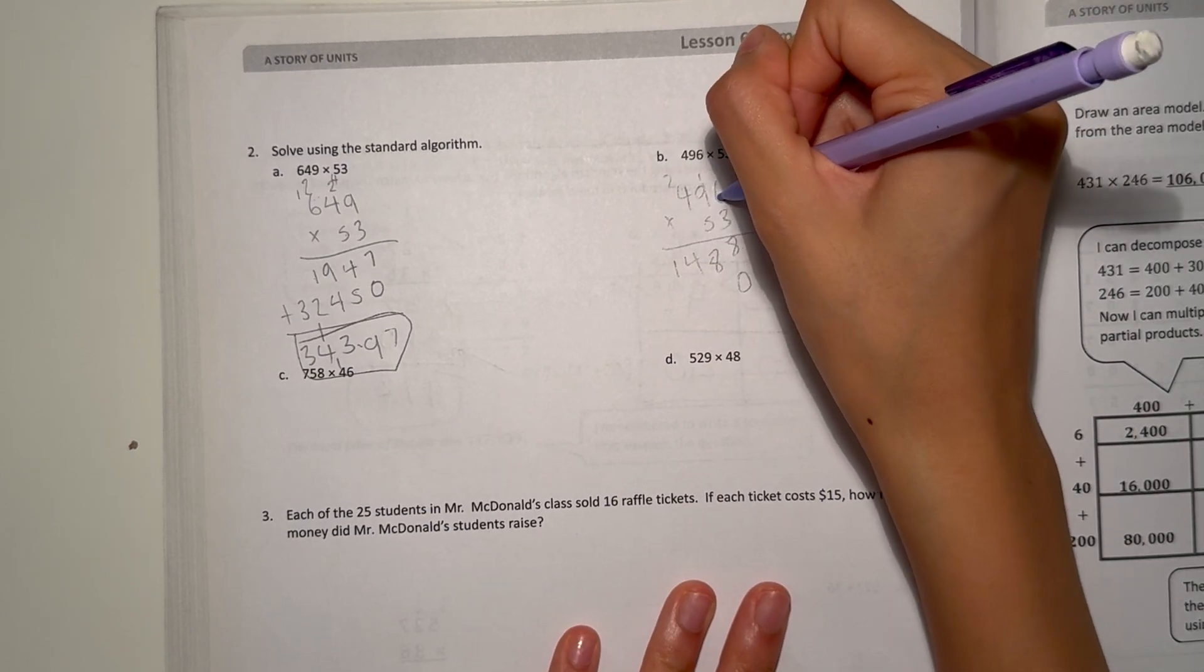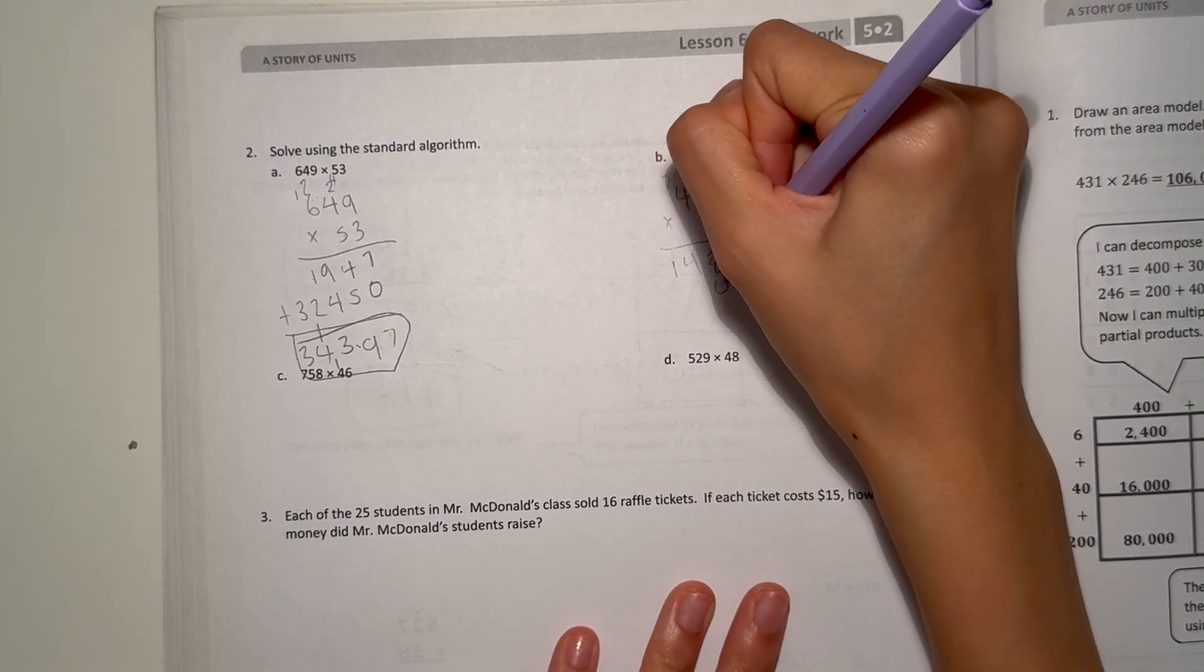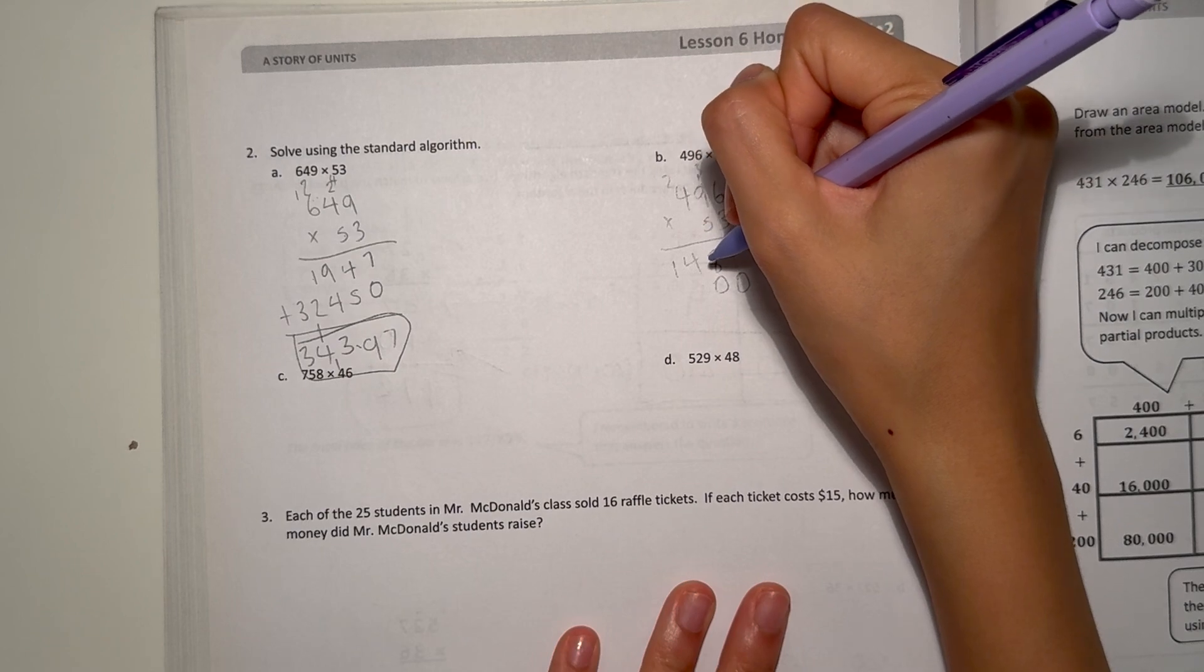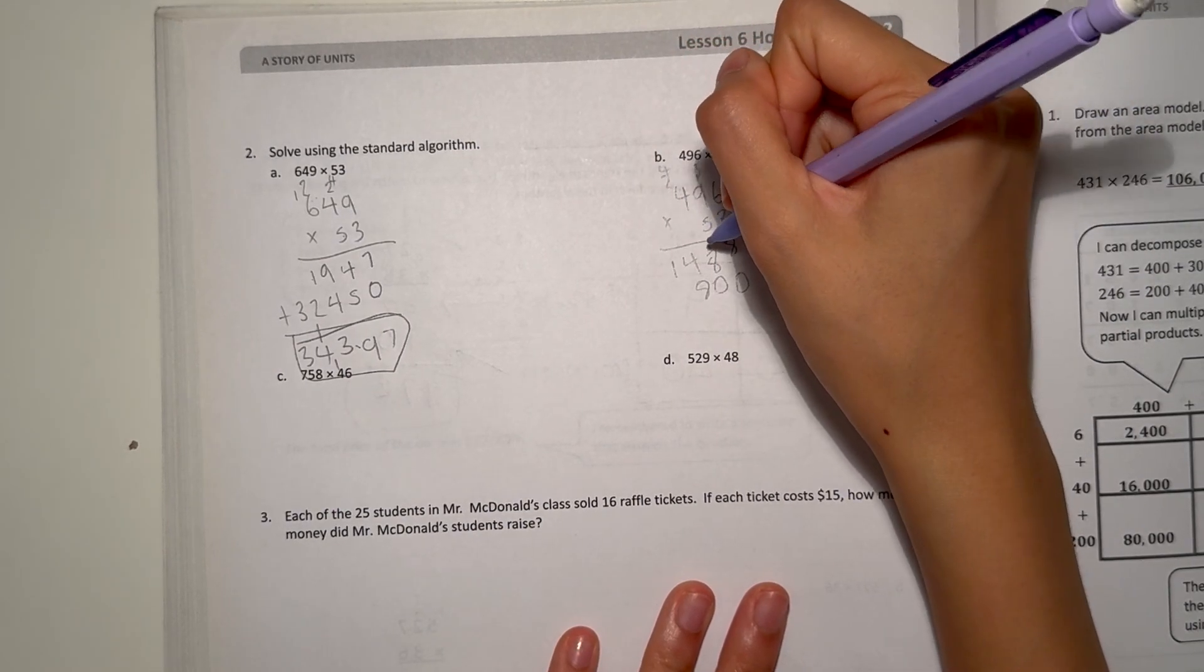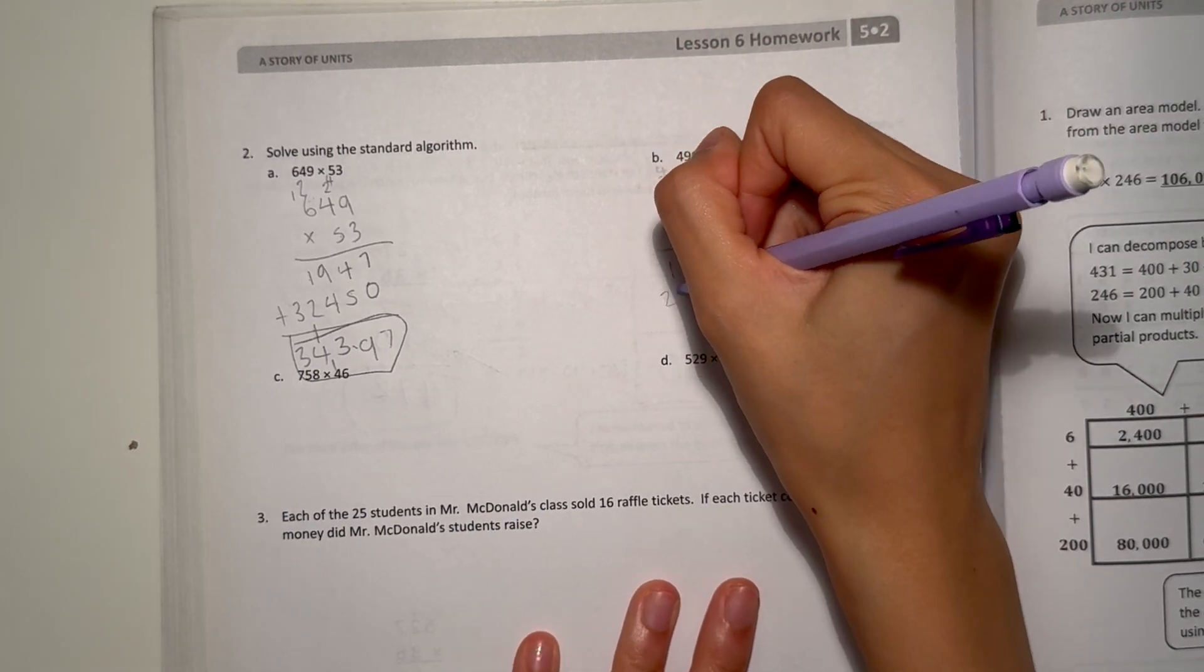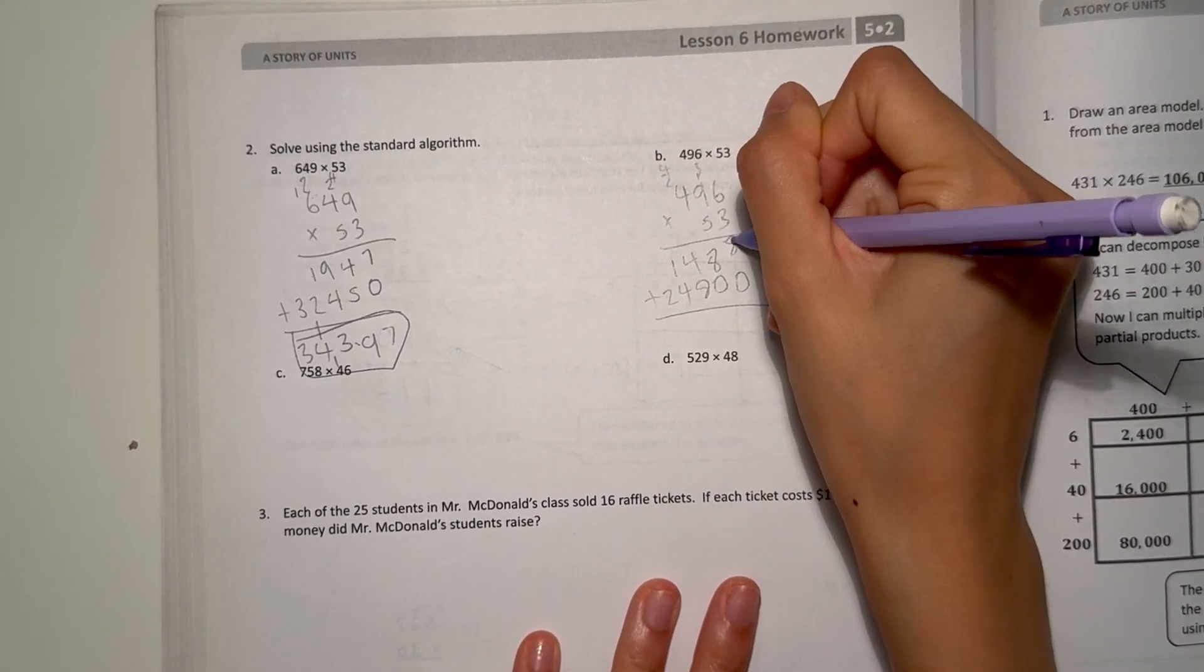Add a 0. Let's look at the 5. 6 times 5 is 30. 9 times 5 is 45. Plus 3 is 48. And then 4 times 5 is 20. Plus 4 is 24.